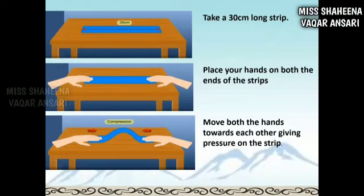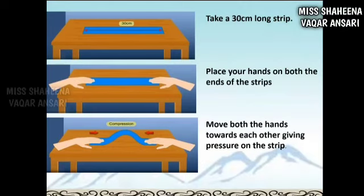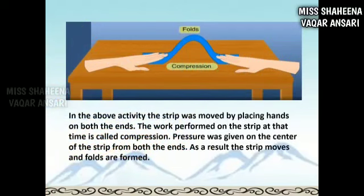As a result, the strip was moved by placing hands on both ends — the work performed on the strip is called compression. Pressure was given on the center of the strip from both ends; as a result, the strip moves and folds are formed. Similarly, due to movement occurring in the mantle, the earth's crust faces pressure and gets folded. This process is called folding. Forces of compression push the rocks against a hard plate from both sides, and compressional force leads to bending of rock layers, leading to the formation of fold mountains.